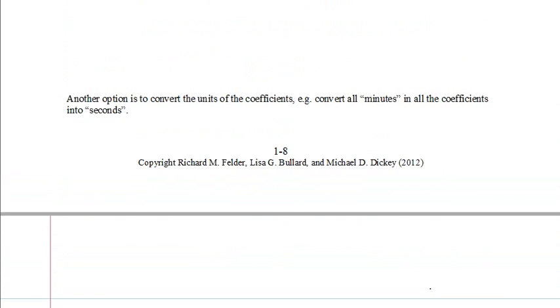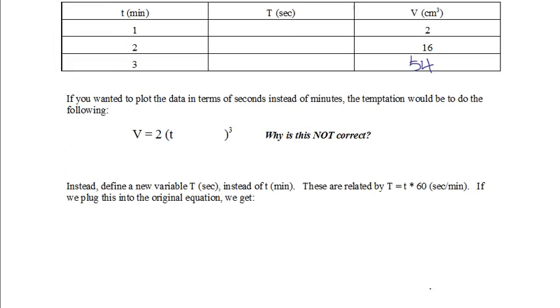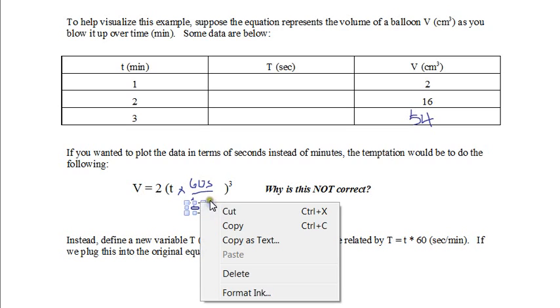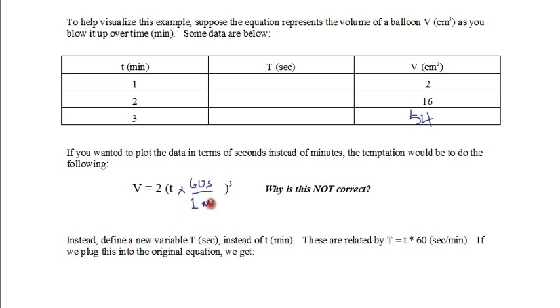Now let's say for some reason you decide that you want to plot this data in terms of seconds instead of minutes. So the temptation would be to do the following. Let's just go ahead and convert t in this equation by multiplying by this conversion factor 60 seconds per 1 minute. Now why is this not correct?